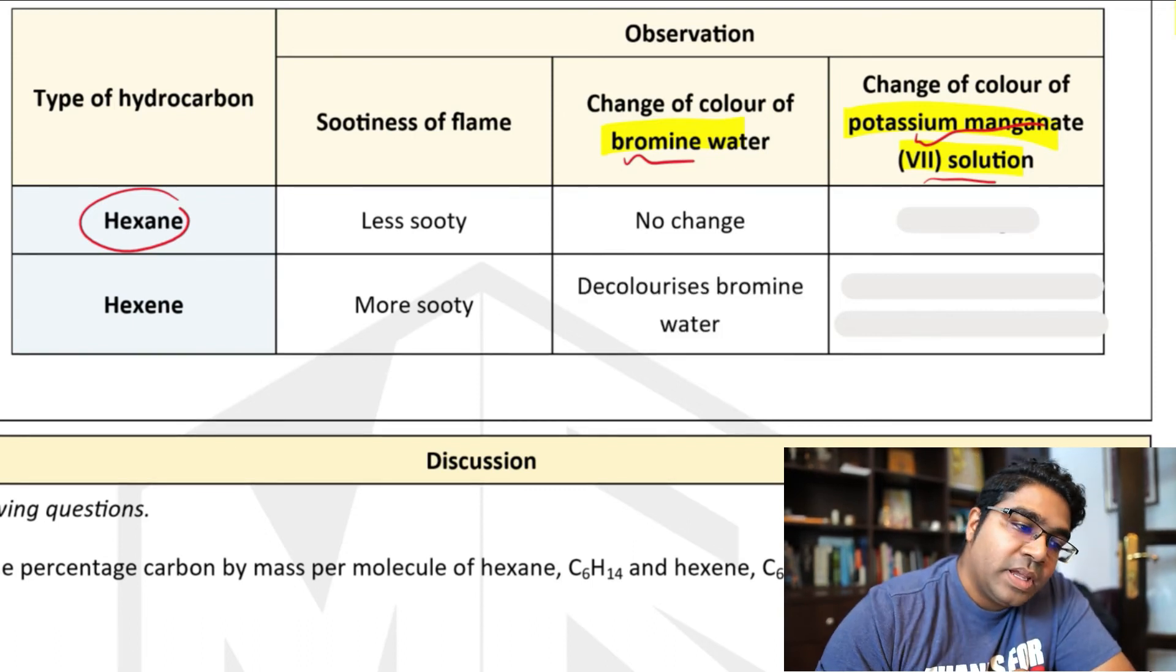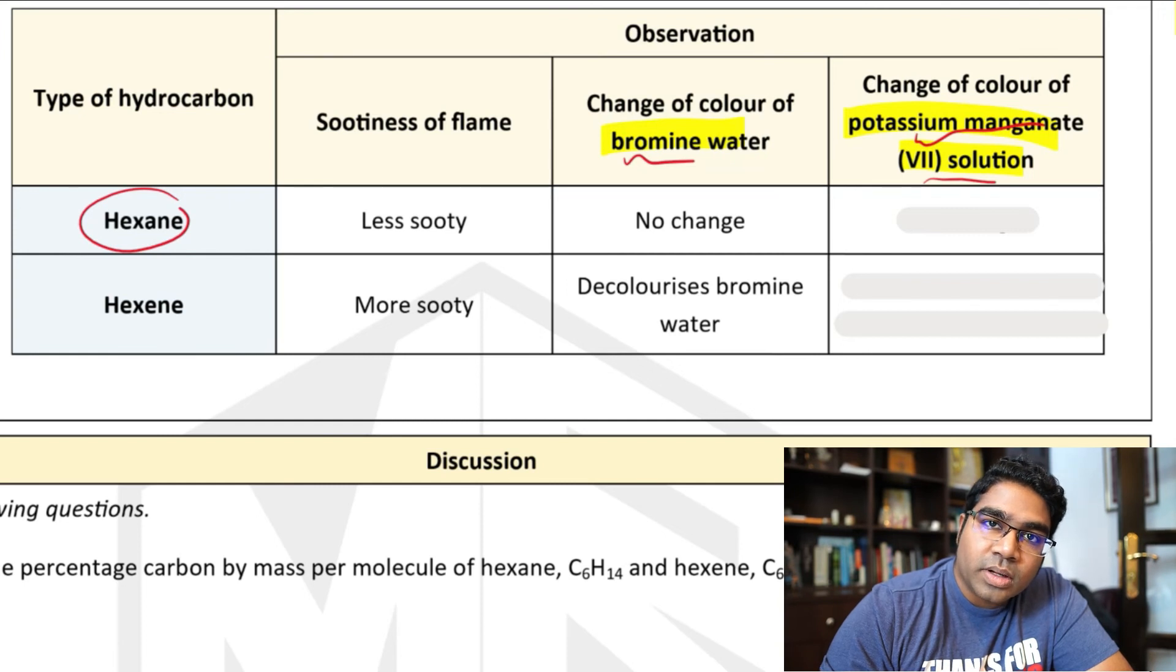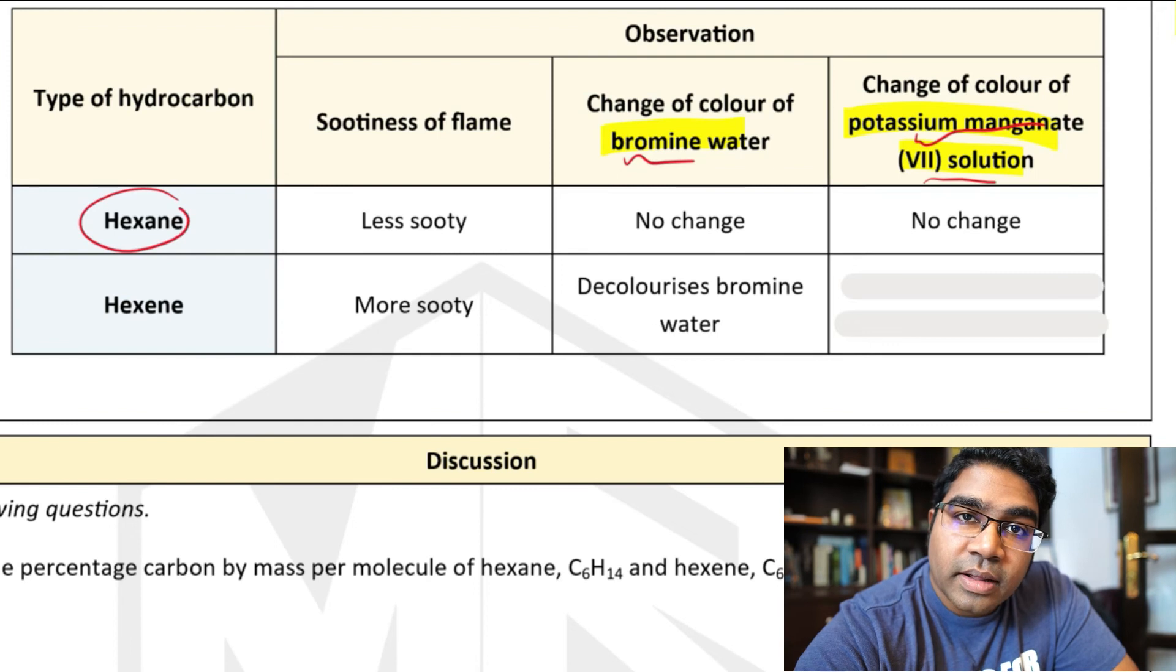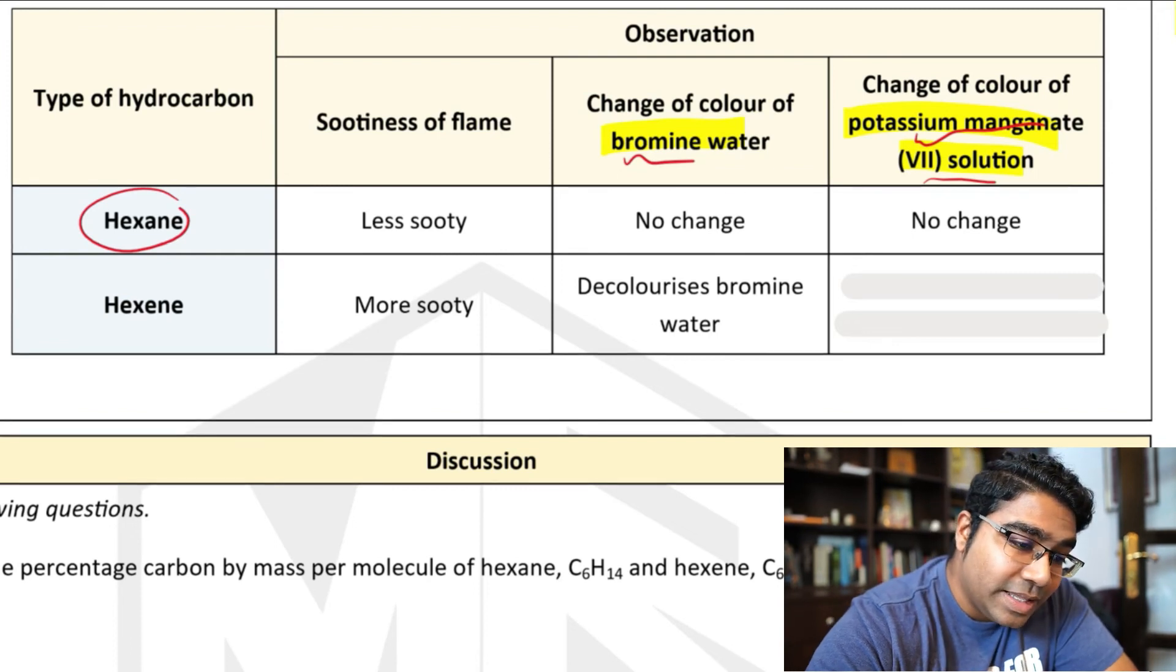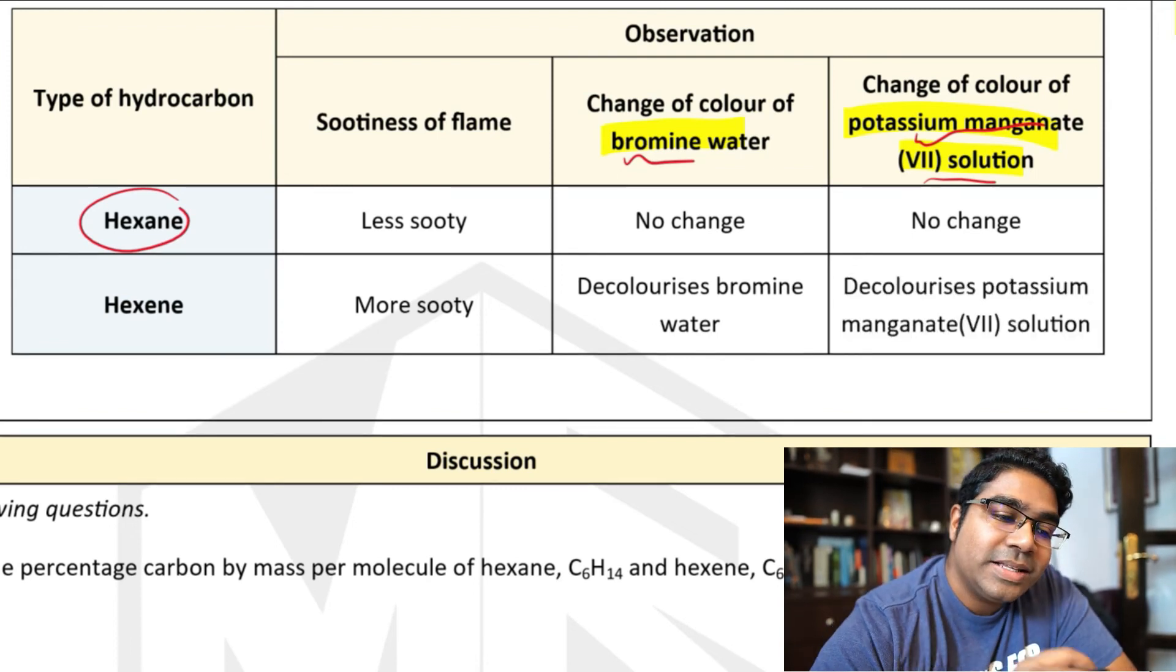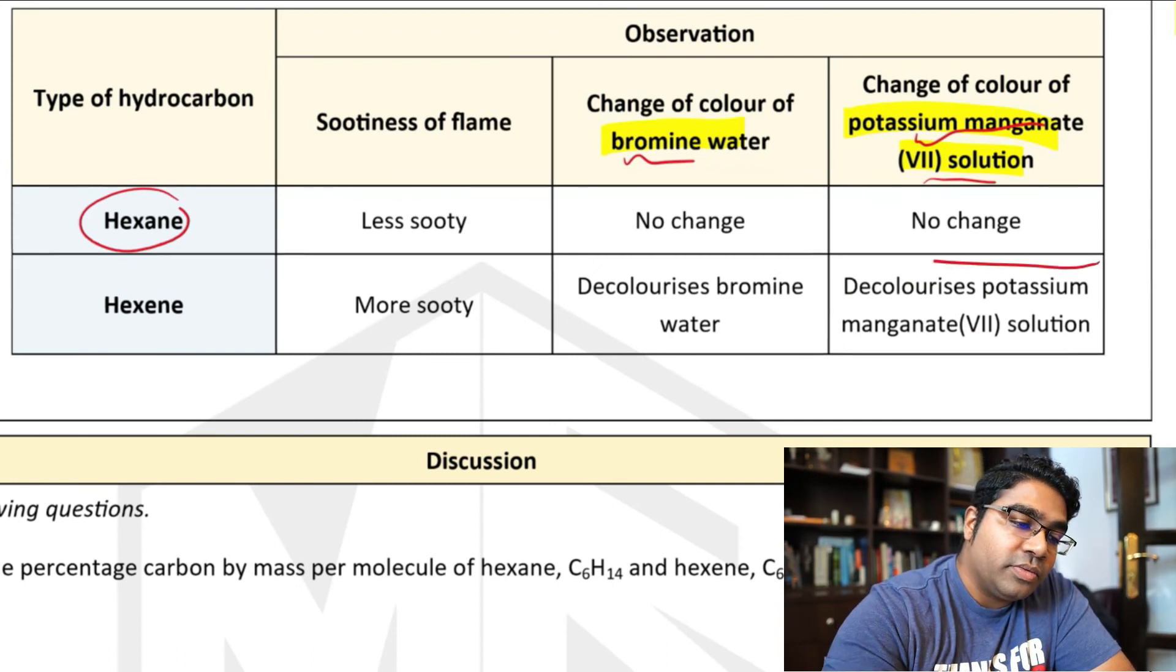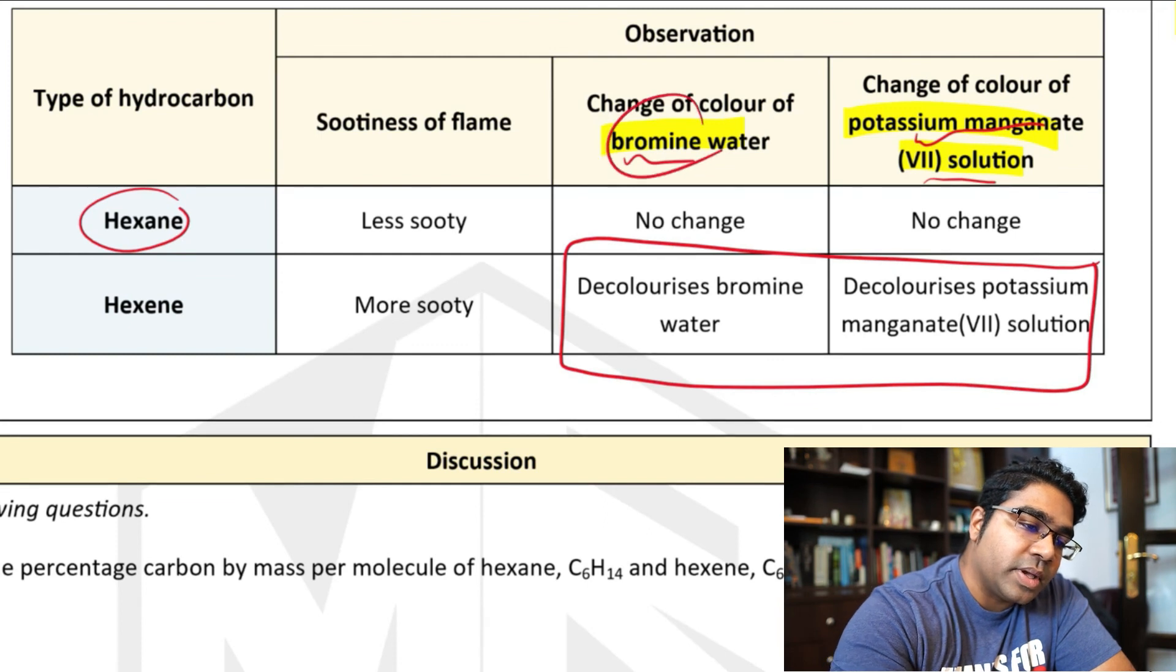Whereas for hexene, it decolorizes the bromine water. And for potassium manganate-7 solution, once again, no change with alkanes. But with hexene, it decolorizes the potassium manganate-7 solution, indicating that reactions have occurred with these two chemicals.